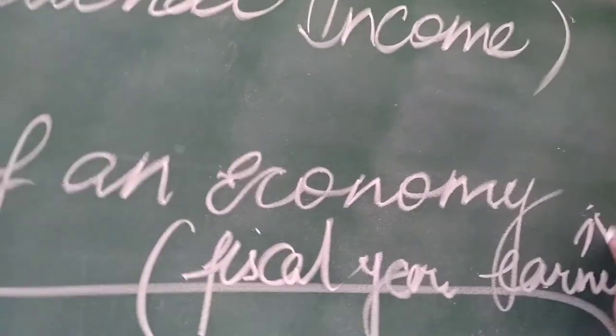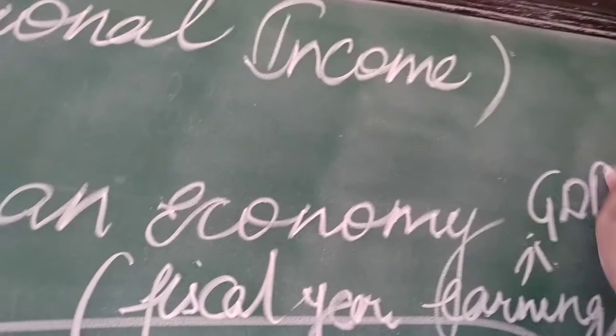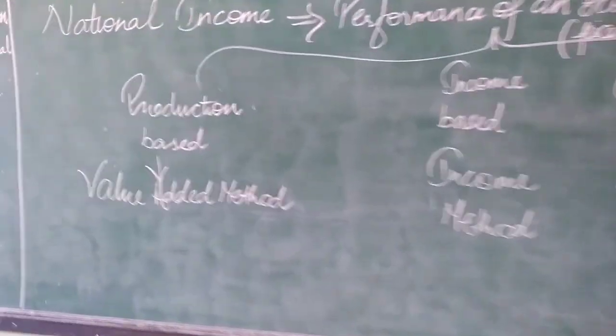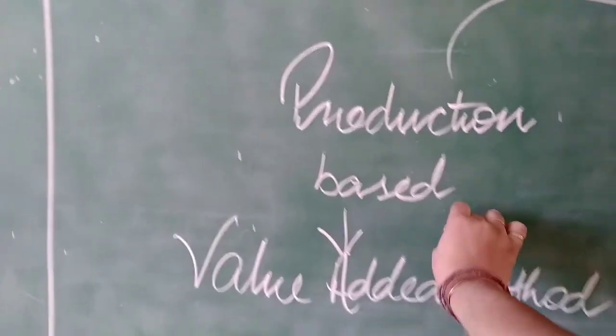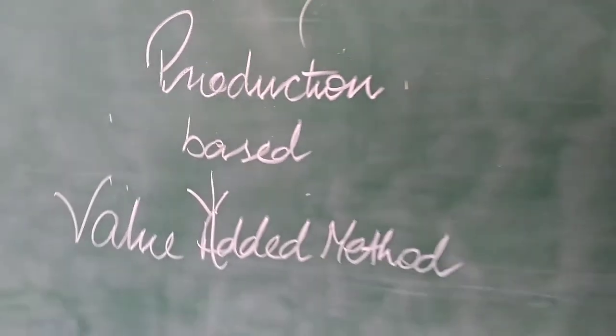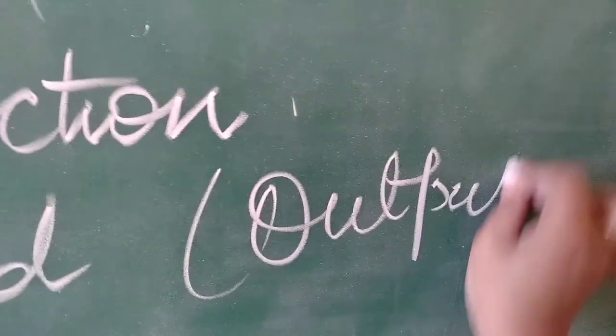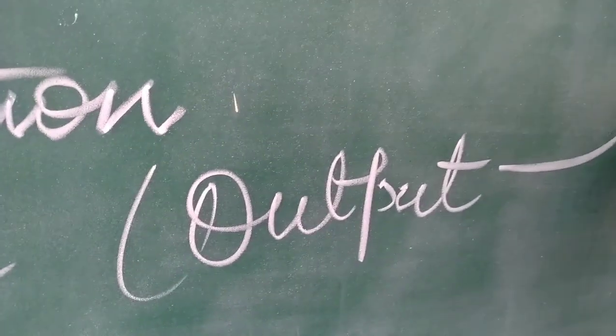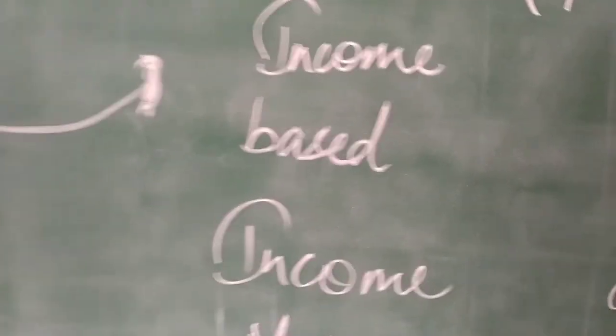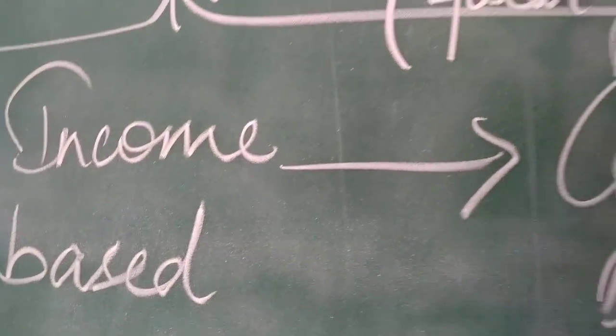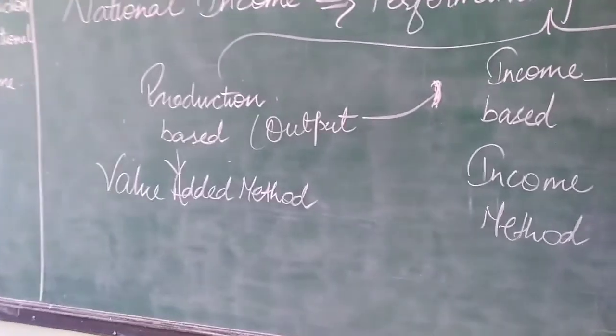This accounts to GDP because it is counted in the production phase first. Then we have the value added method, then the output. Output generates the income cycle, and this income cycle generates expenditure. These three accounts form the national income.